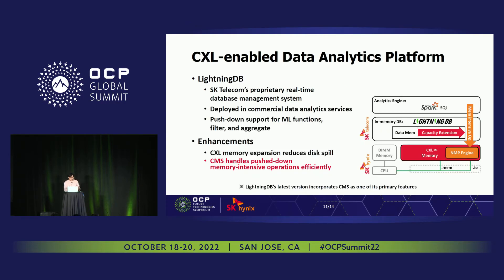The second enhancement applied to our baseline system is the computational memory solution. In addition to expanding system memory, we have a near memory processing engine that can handle predicate push-down and memory-intensive operations much more efficiently than CPUs. In this system, the CXL NMP engine handles data residing in CXL memory, while CPUs process data in DDR DIMMs in parallel.